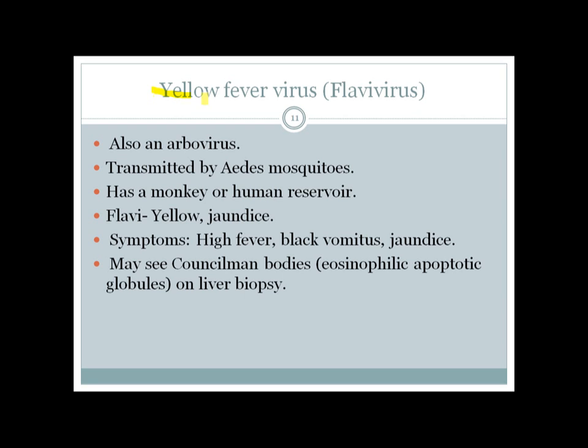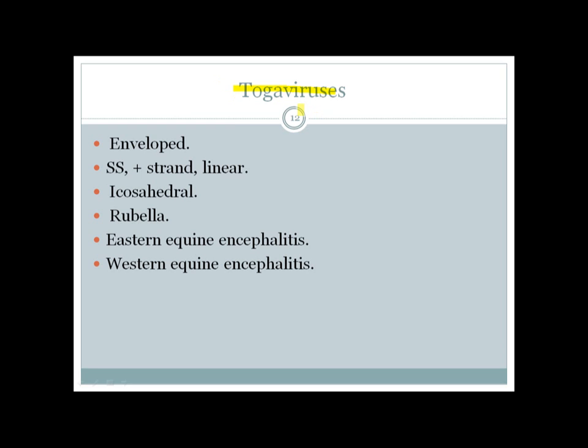Yellow fever virus is an important member of the Flavivirus group. It is an arbovirus transmitted by the Aedes mosquito, with a reservoir in humans or monkeys. 'Flavivirus' means yellow or jaundice. Yellow fever presents with jaundice, fever, and black vomitus. It infects the liver, causes apoptosis of hepatic cells, and on liver biopsy you can see Councilman bodies, which are eosinophilic apoptotic globules.